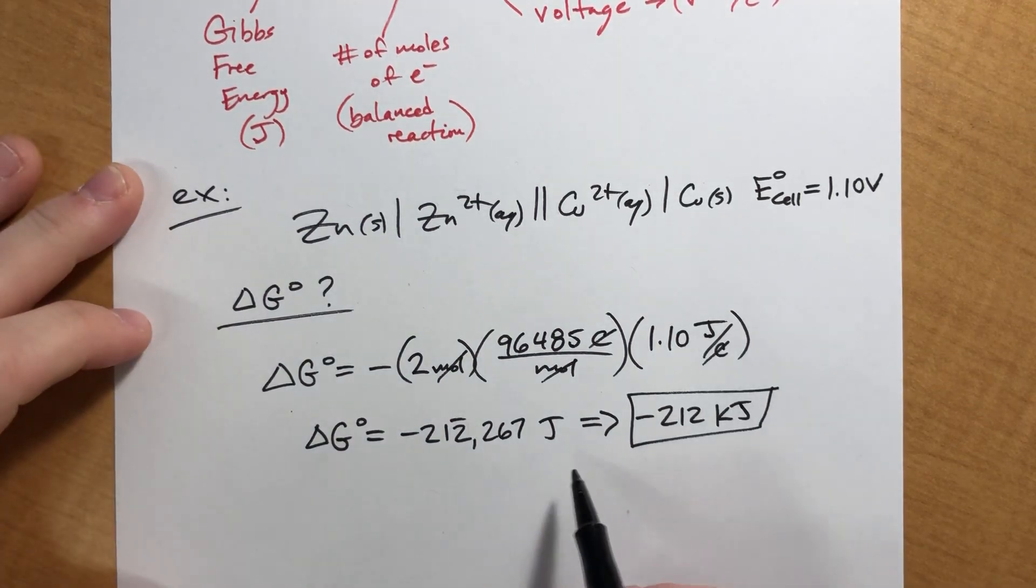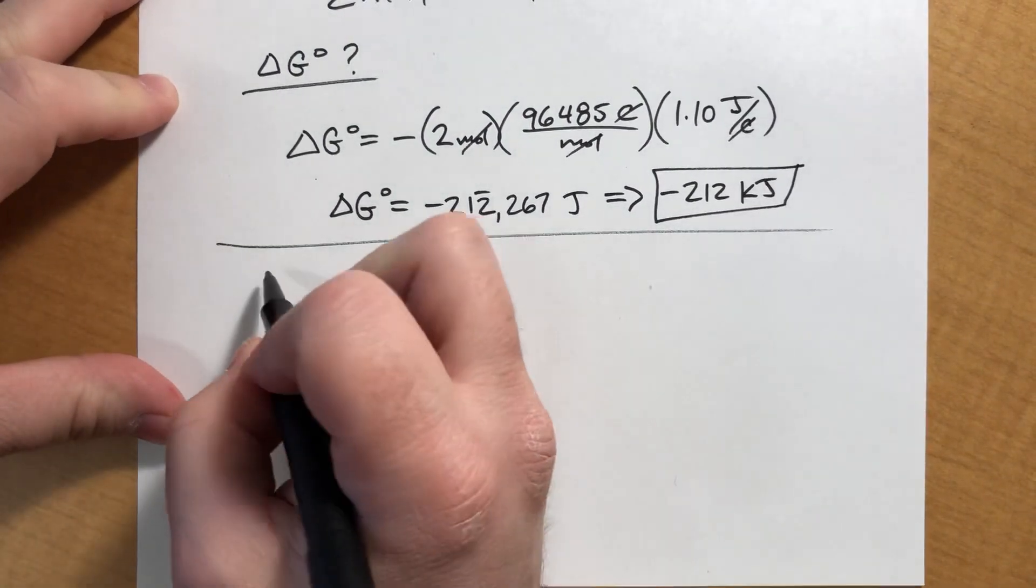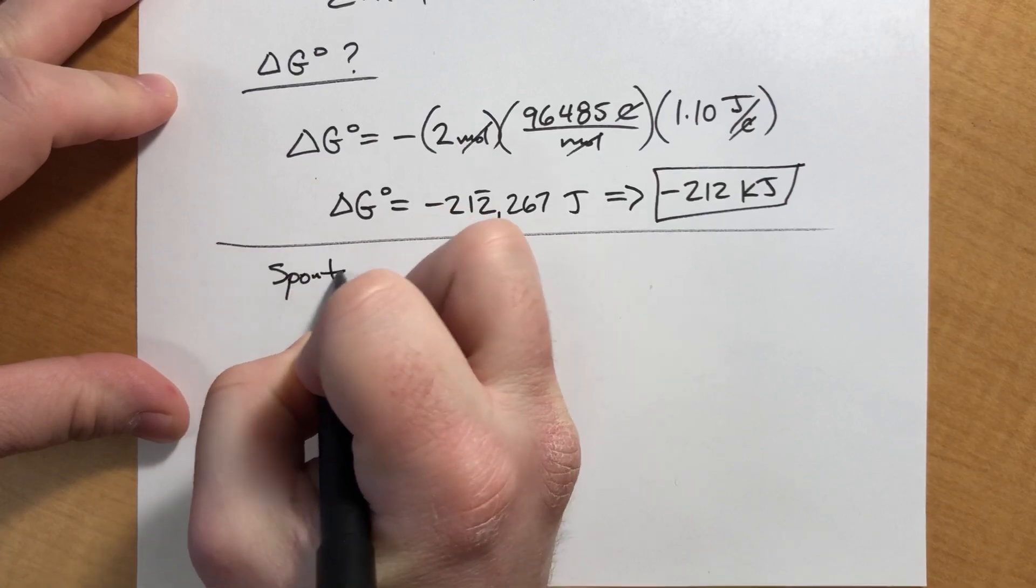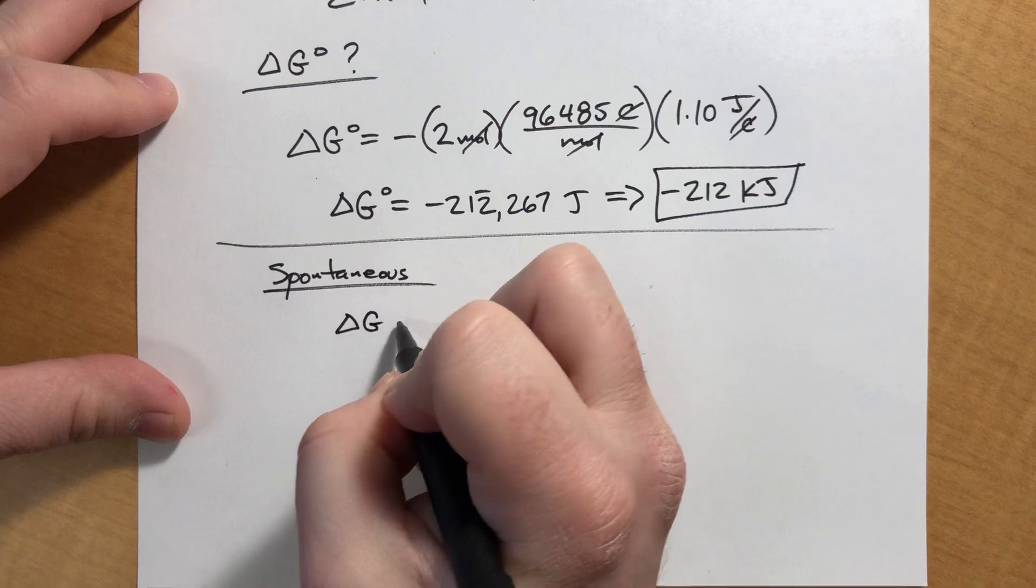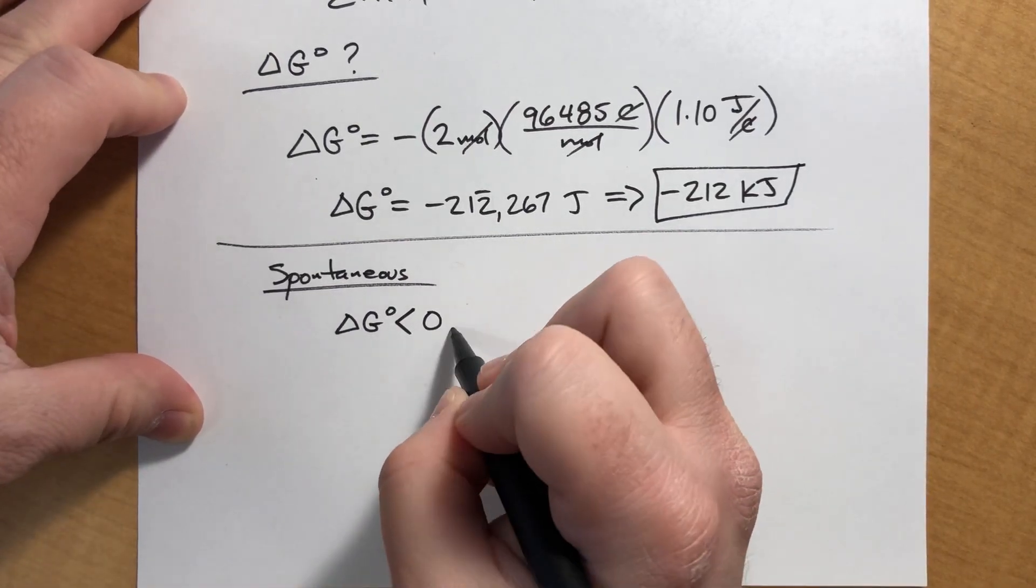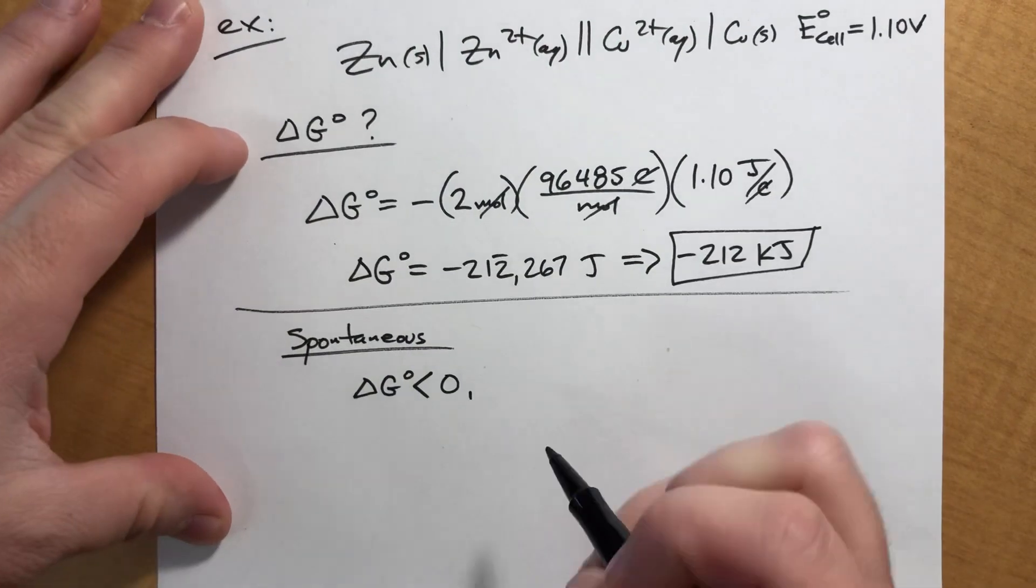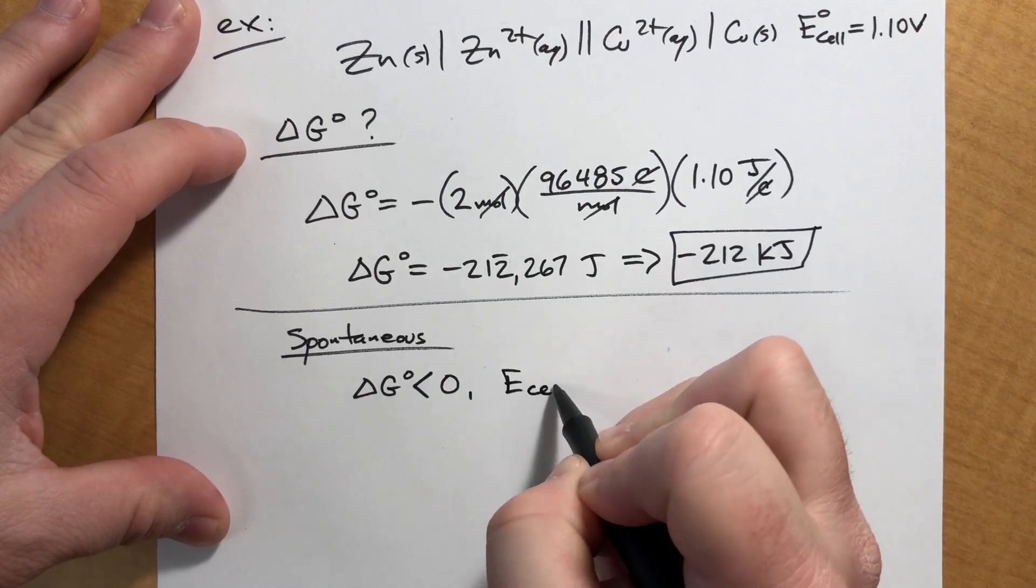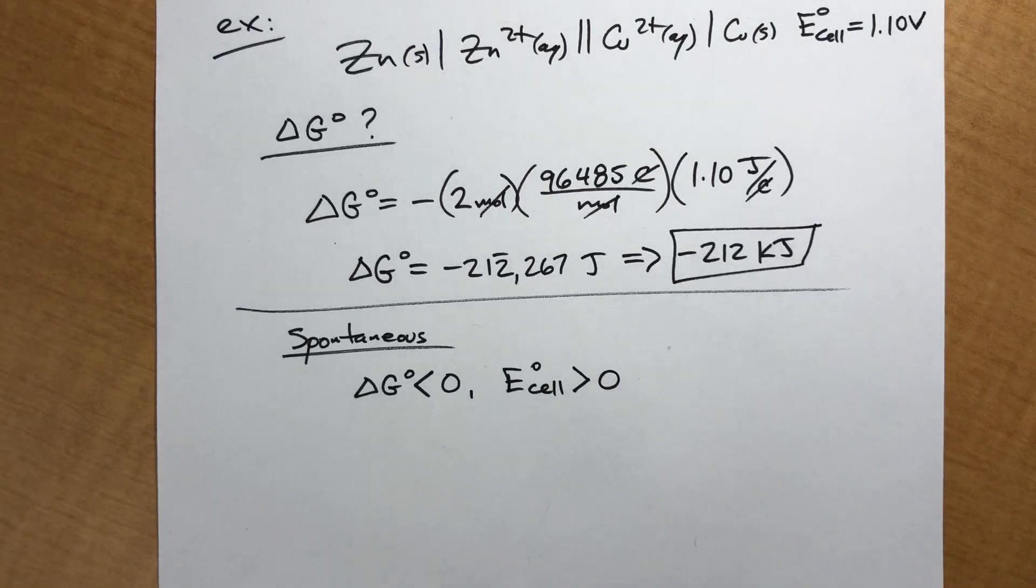This does actually point to stuff that we had to deal with in the last chapter. If a reaction is spontaneous, we said that delta G should be negative. So delta G will be less than zero. But because of this negative sign, that means that the voltage should be positive. So if you have a cell diagram and it comes out to have a positive voltage, we would expect it to be spontaneous as written.